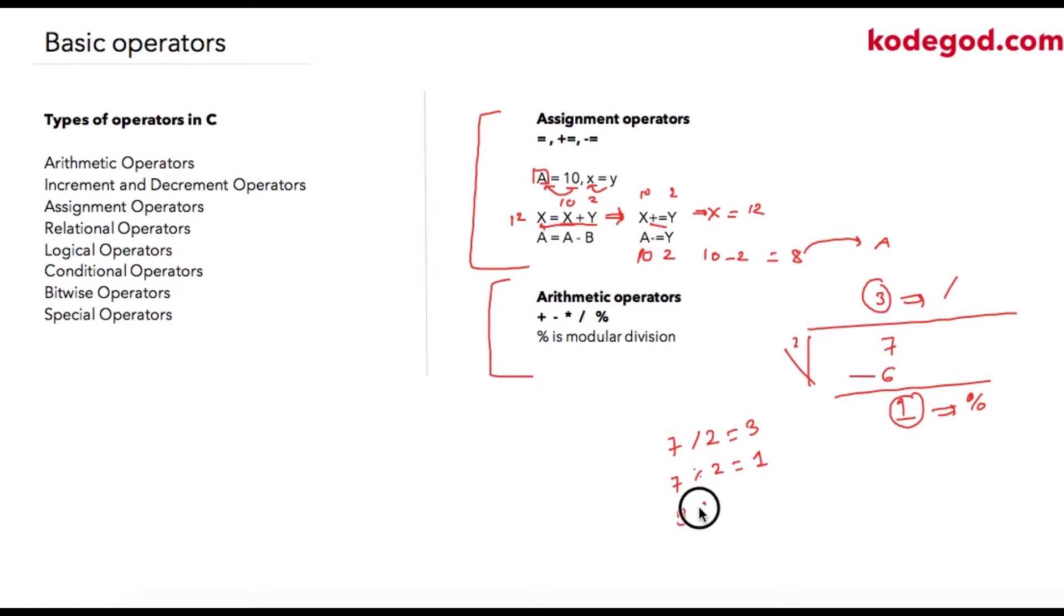Similarly, if I write 3 modular division 3, it will be 0. And 3 divided by 3 will be equal to 1.